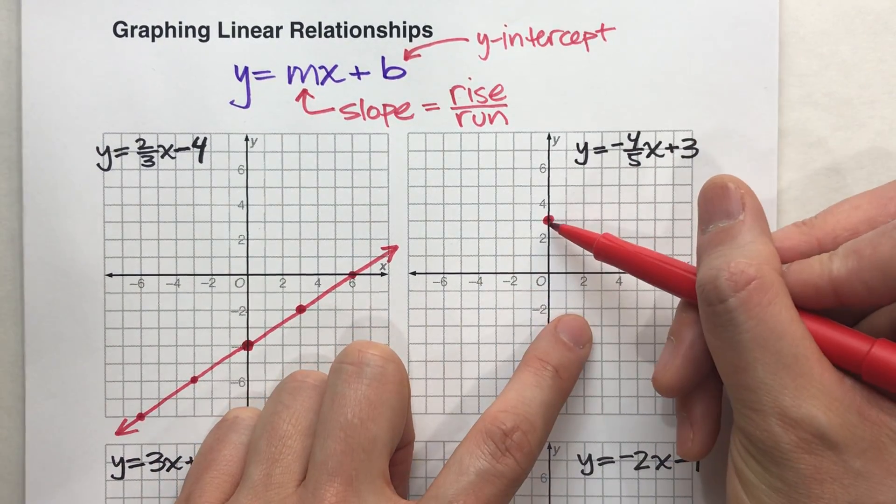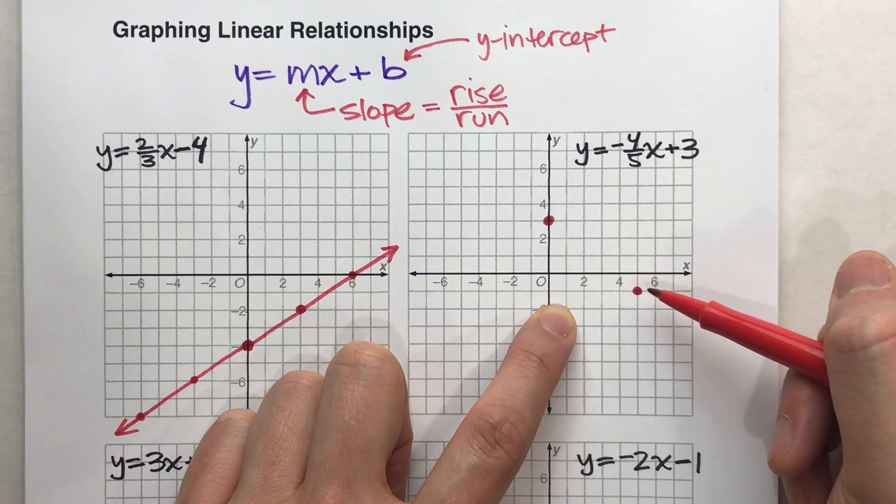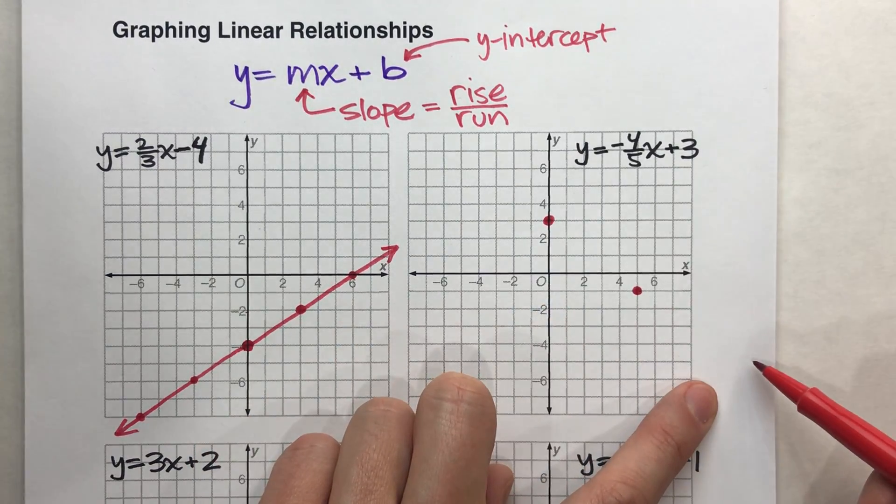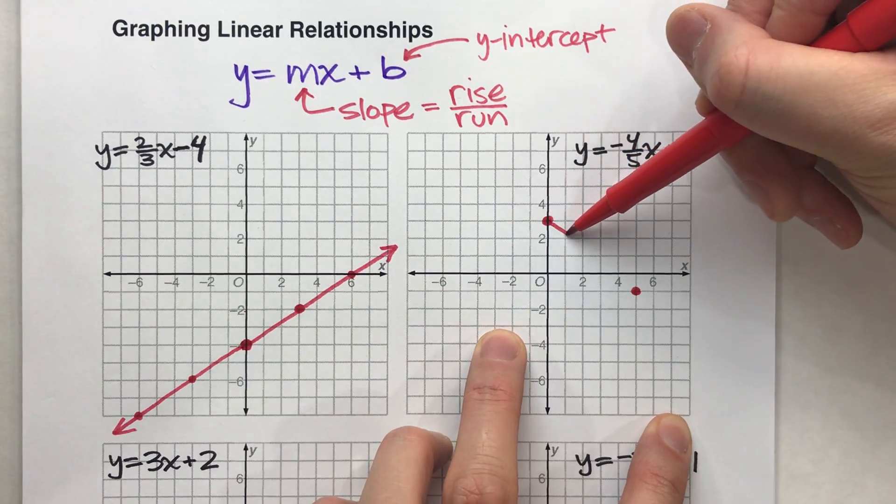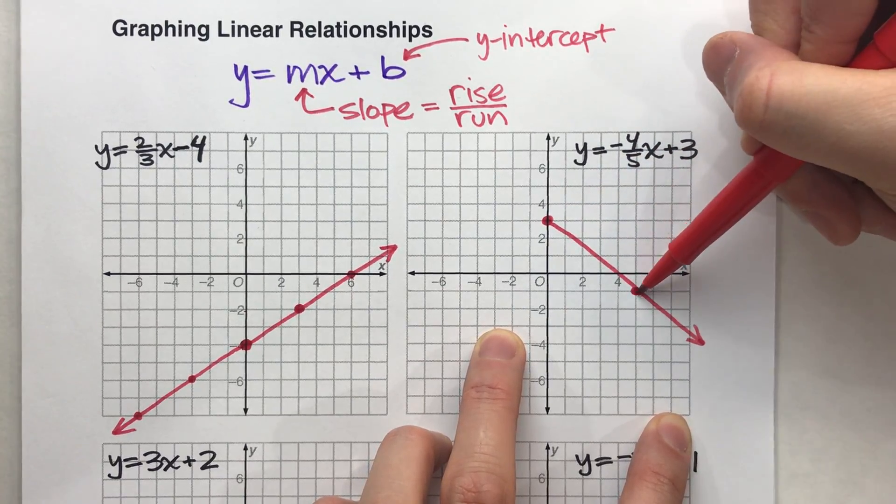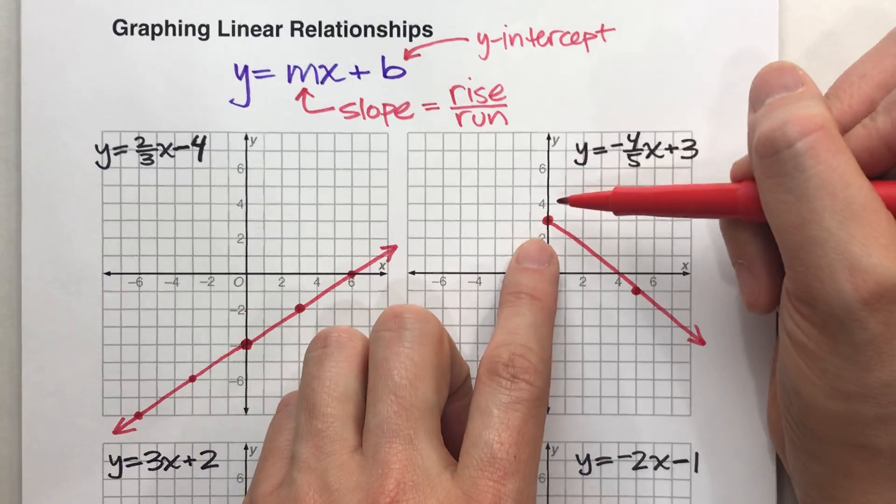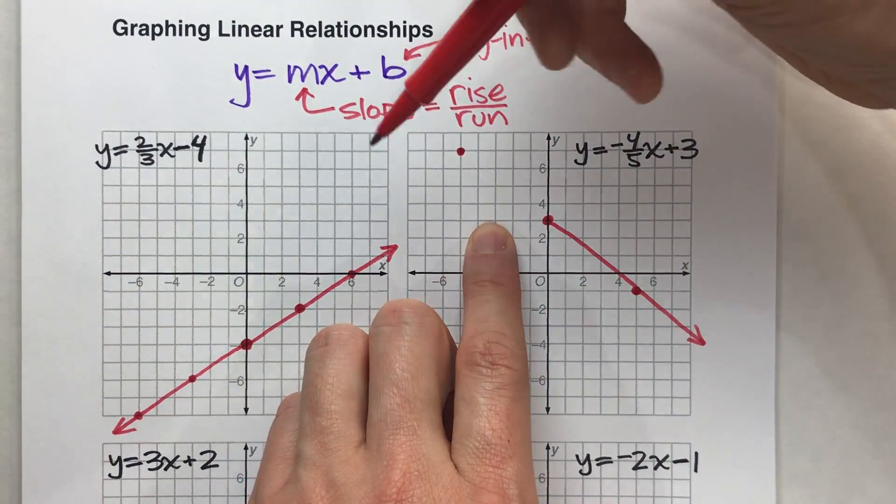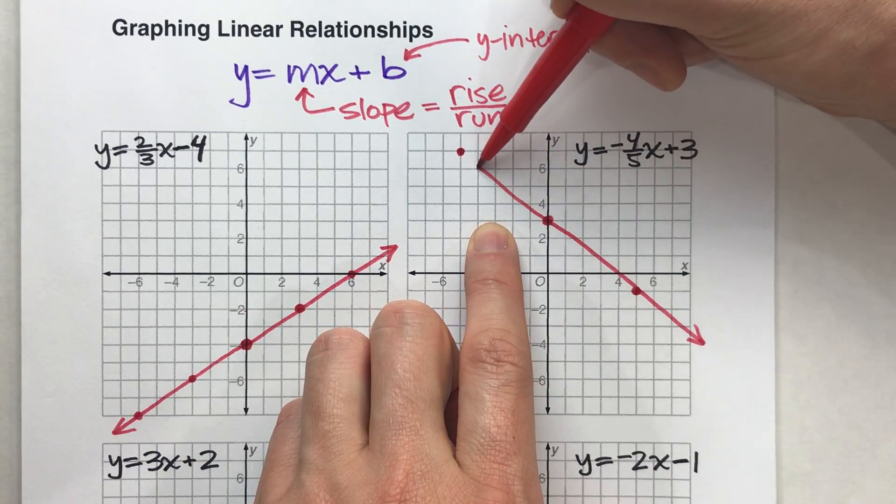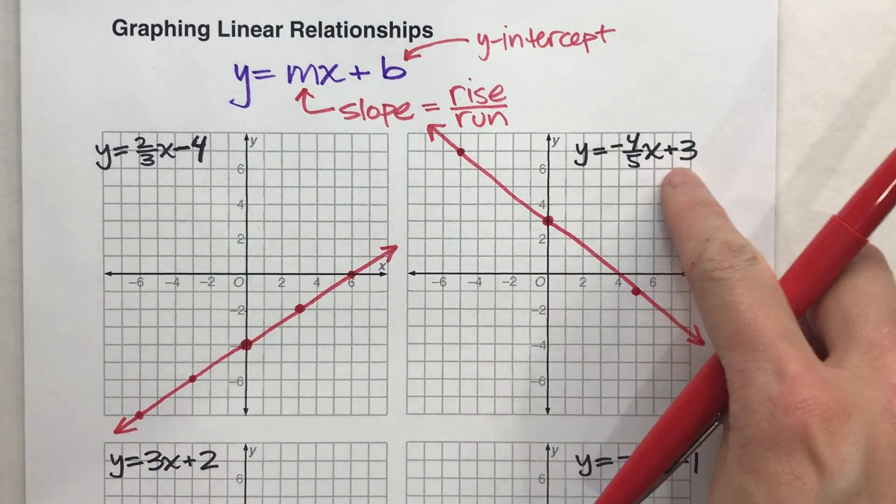So from here, I'm going to go down four, right five, plot a point. Down four, right five, plot a point. So I would continue it in that direction. So it looks something like that. And I should continue it the other way also. So I'll go up four and back five. And there's the rest of my line that way. And that's the graph of that equation.